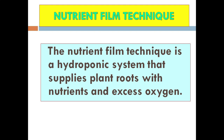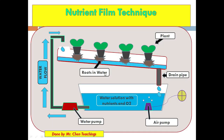The Nutrient Film Technique (NFT) is a hydroponic system that supplies plant roots with nutrients and excess oxygen. It is a hydroponic system but slightly modified — more oxygen is added. An air pump is added to the reservoir, and this air pump adds more oxygen to the nutrient solution. The more oxygen the plants get, the quicker they will mature, making this system very efficient, productive, and fast.